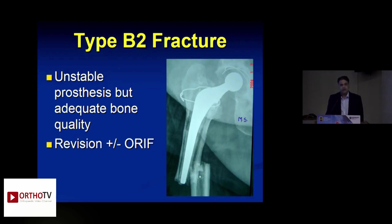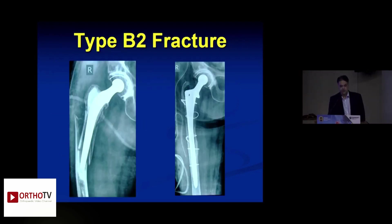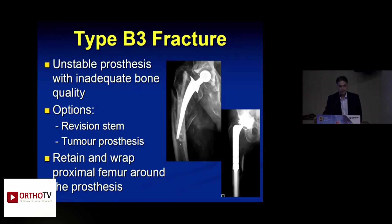B2 fractures have a loose stem but good bone quality, so a straightforward revision is performed using a long stem to bypass the fracture by two bone diameters. In B3 fractures, where the prosthesis is unstable and bone stock is inadequate, a simple revision may not be possible and a proximal femoral replacement may be required.